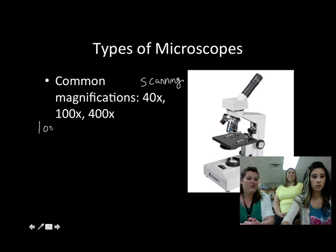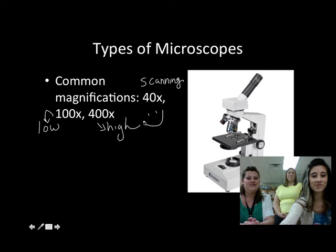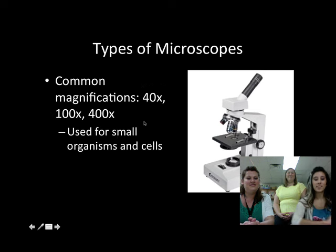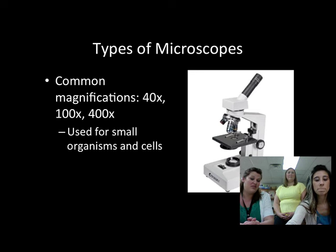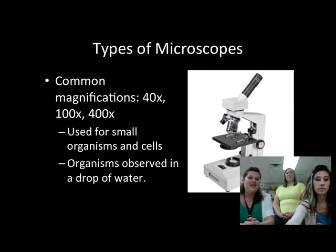Then we have low power, which is 100x magnification, and high power, which is 400x magnification. These are used for small organisms and cells, a lot of the slides we'll give you to observe in class, and organisms observed on a drop of water.